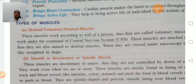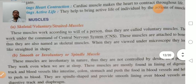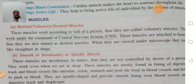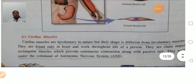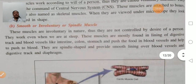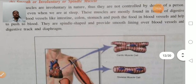Skeletal muscles are voluntary muscles. Smooth muscles do not work according to your will — they work even when you are asleep. They are mainly found in internal organs like the intestine and stomach, for pushing food. Cardiac muscle is the only muscle found in the heart; it is involuntary in nature.